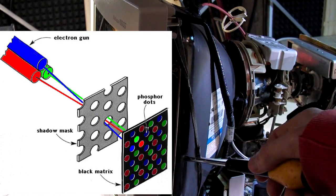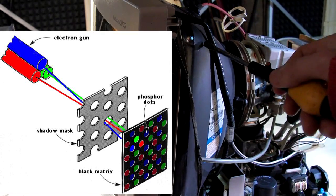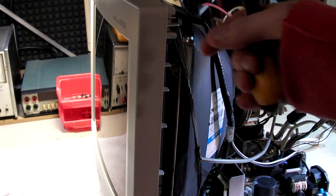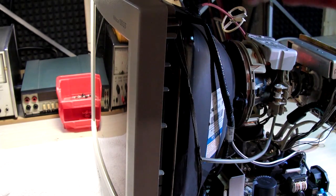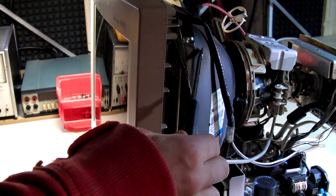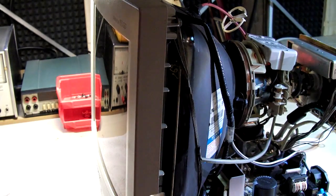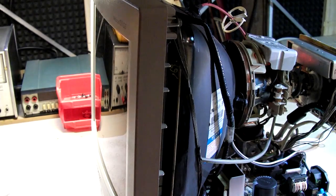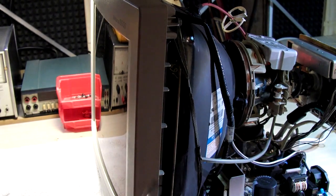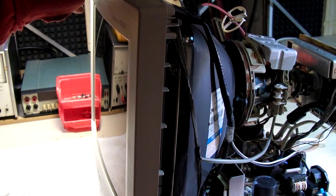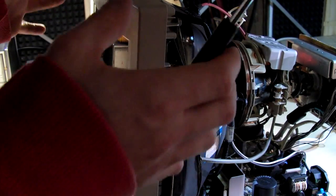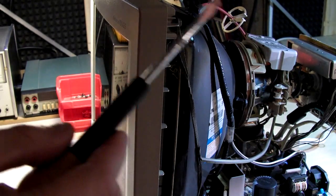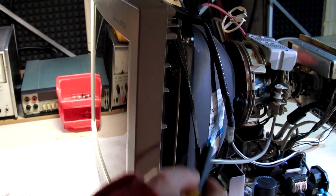The red, blue, and green beams, they actually pass through tiny little holes and get to the phosphor screen. Well, the mask sometimes can be magnetized because the mask is actually some kind of metal. And the magnetization on your CRT screen is not good because you will see your image distorted.